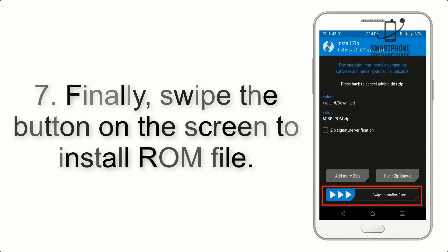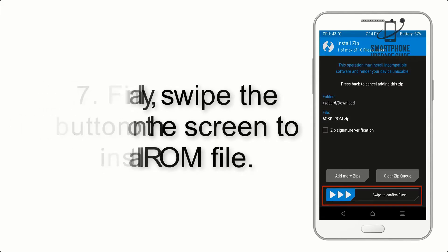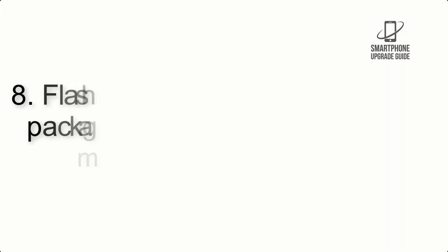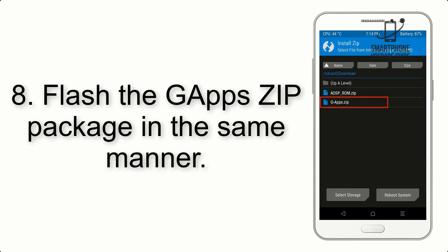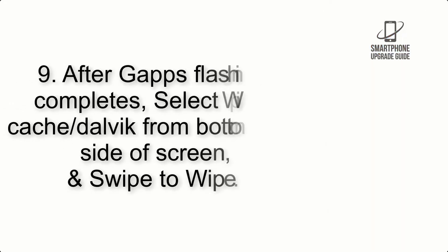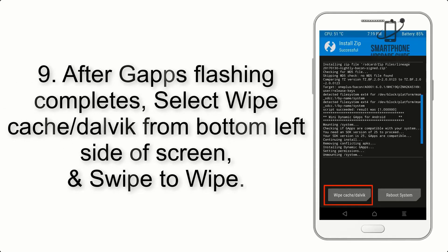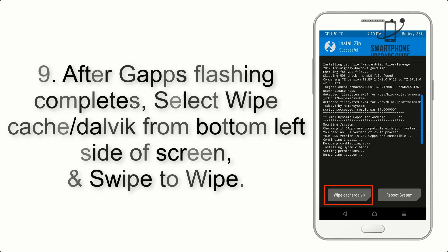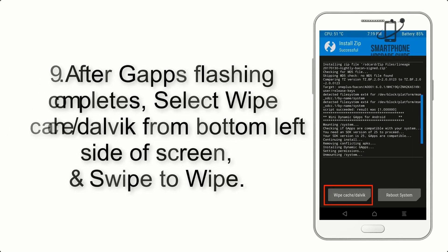Step 6: navigate to the storage and select the ROM zip file. Step 7: swipe the button on the screen to install the ROM file. Step 8: flash the GApps zip package in the same manner.